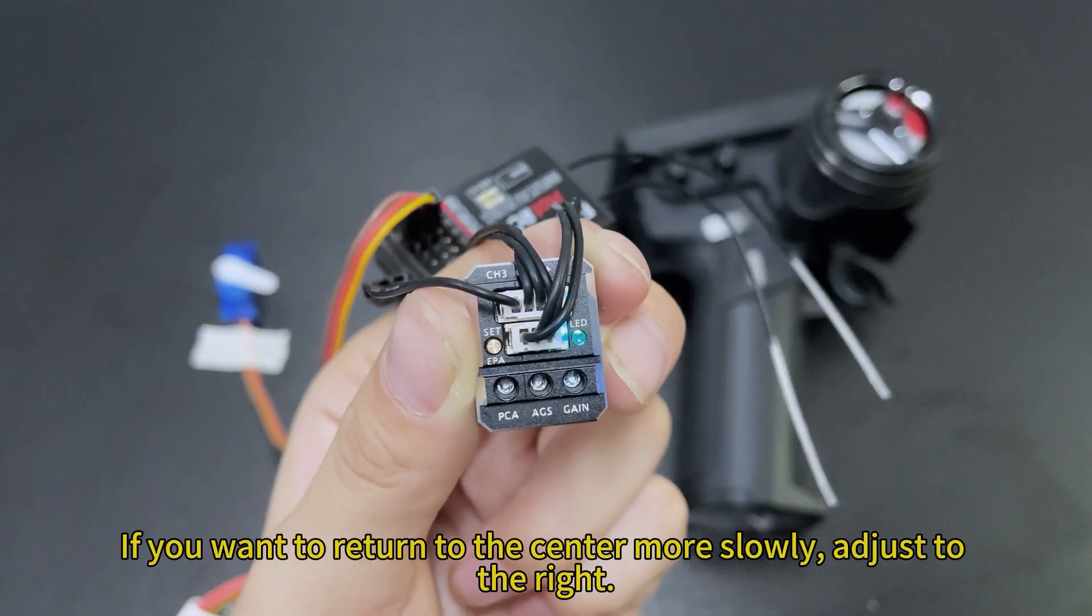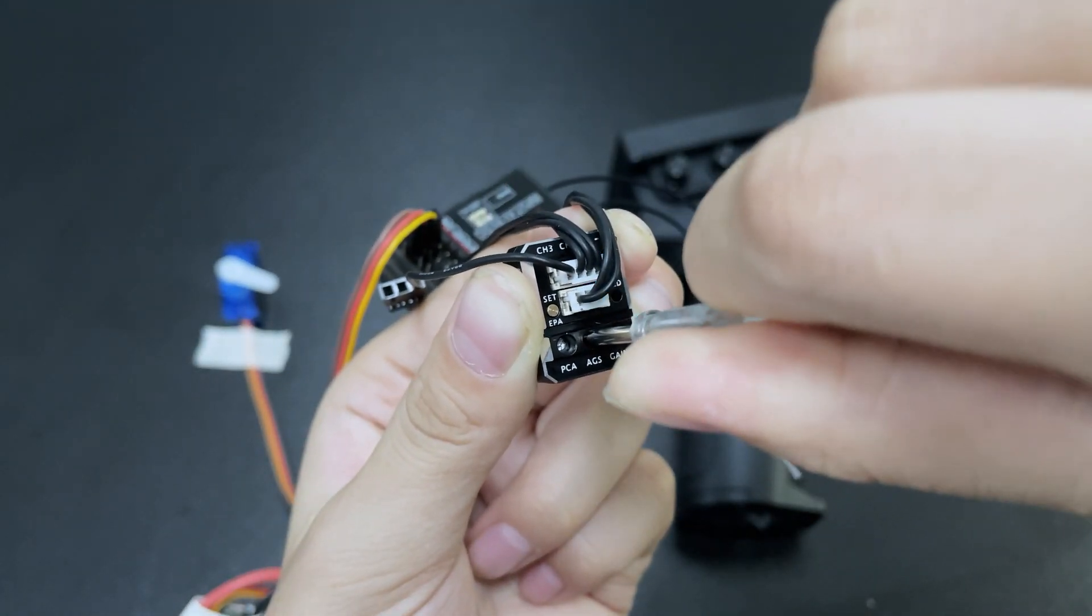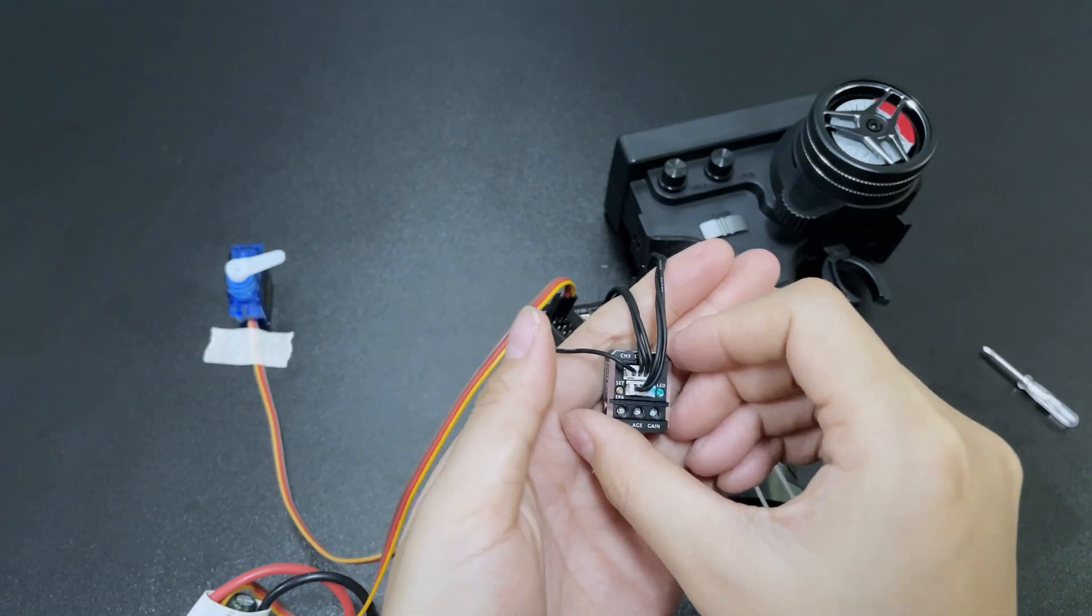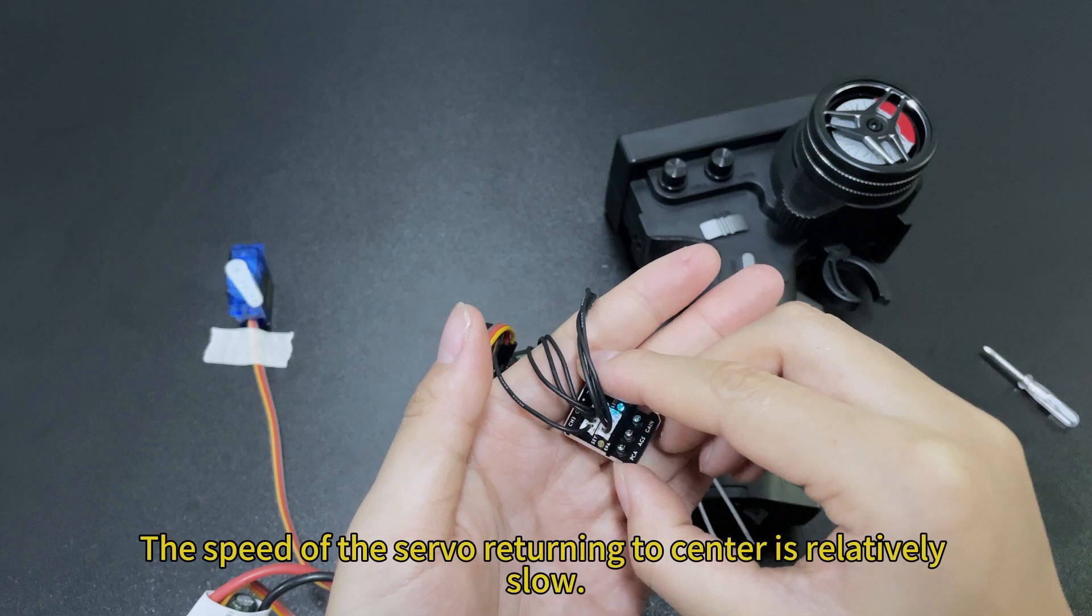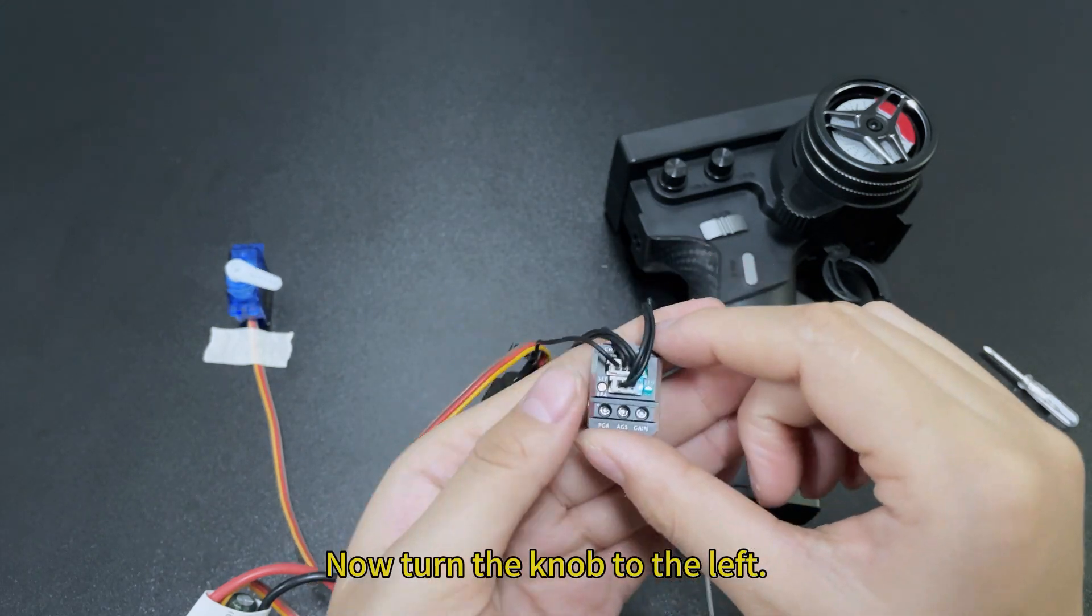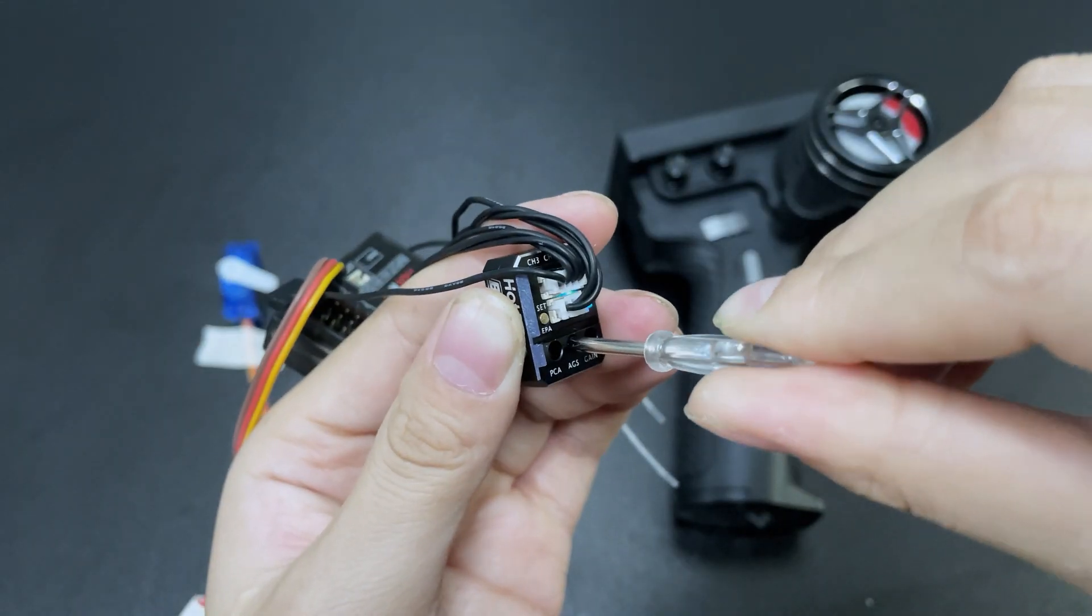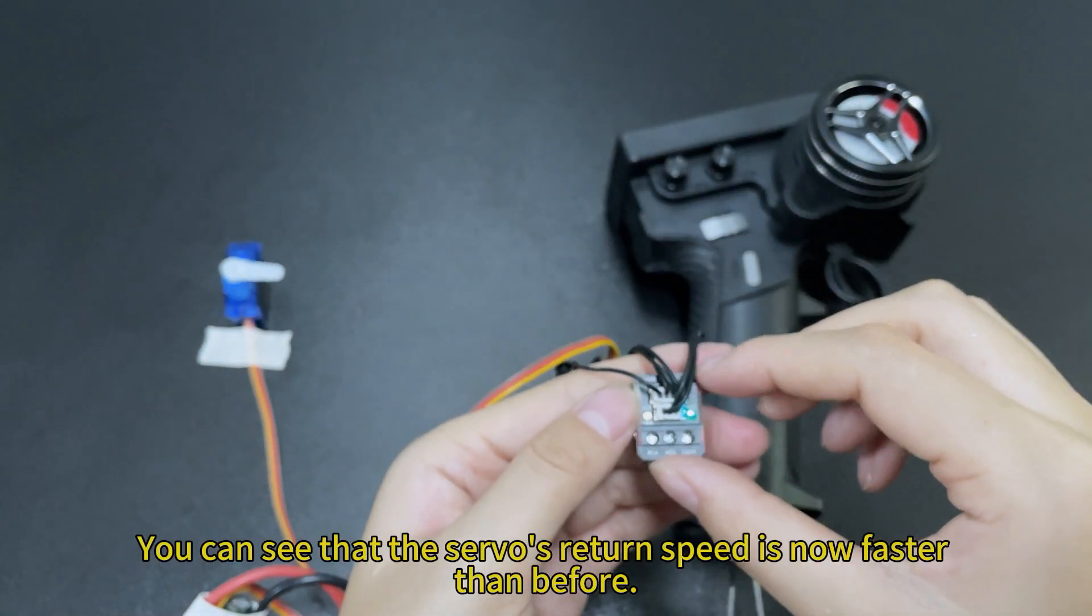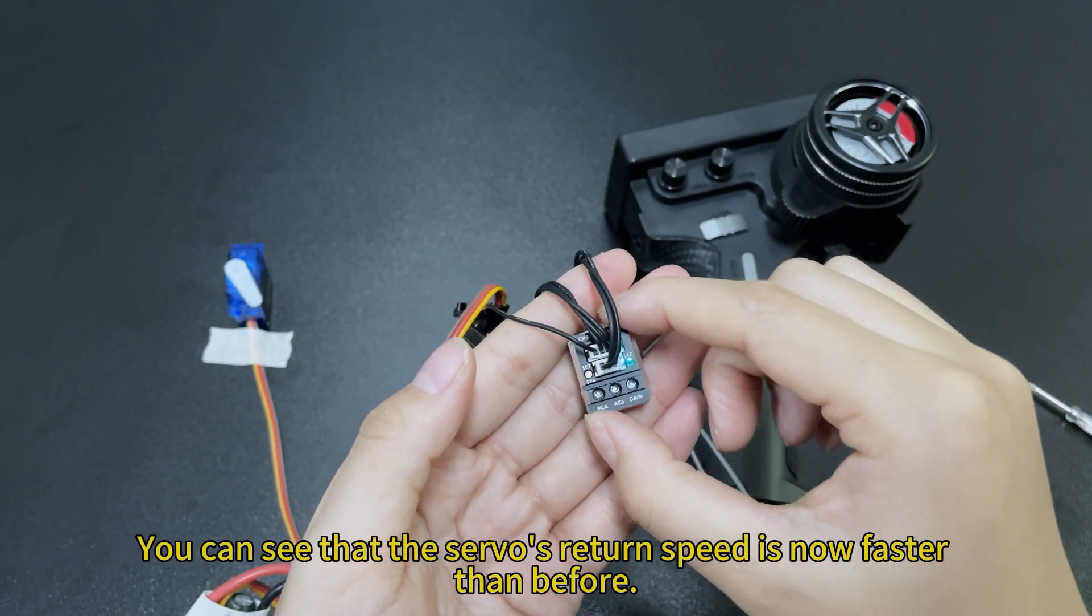As we see now. The speed of the servo returning to center is relatively slow. Now turn the knob to the left. You can see that the servo's return speed is now faster than before.